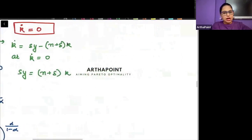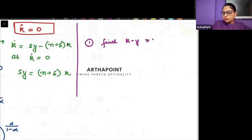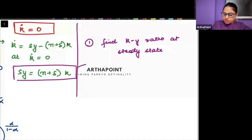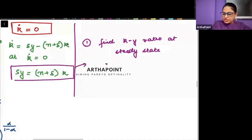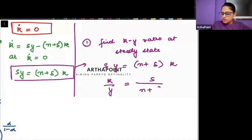Now, there are multiple things that can be asked in exam. So, the first thing will be find capital output ratio at steady state. So, if I want to find the capital output ratio, it is simple. If I have sy is equal to n plus delta k, then k by y will be s divided by n plus delta.